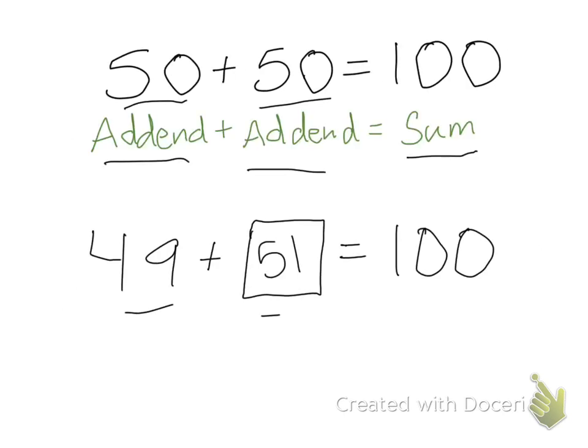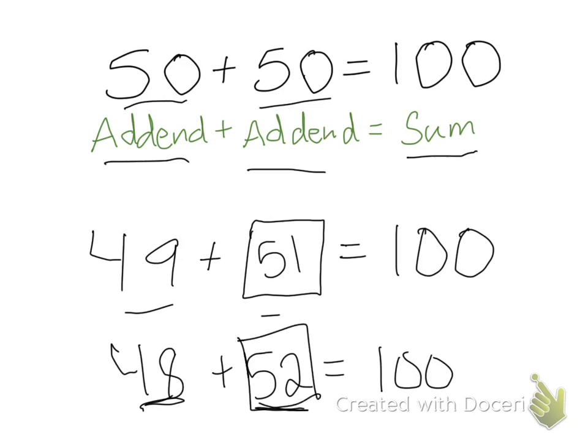What about if I had 48? I would know that 48 plus 52 has to equal 100, because if I take one from this side, I would have to add it to the other side. We call these missing numbers the missing addend.